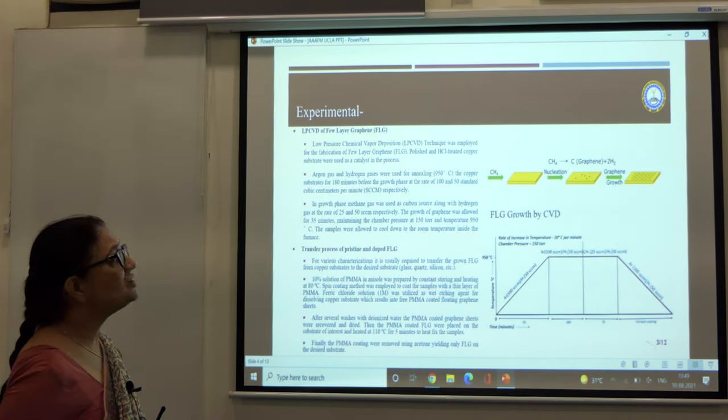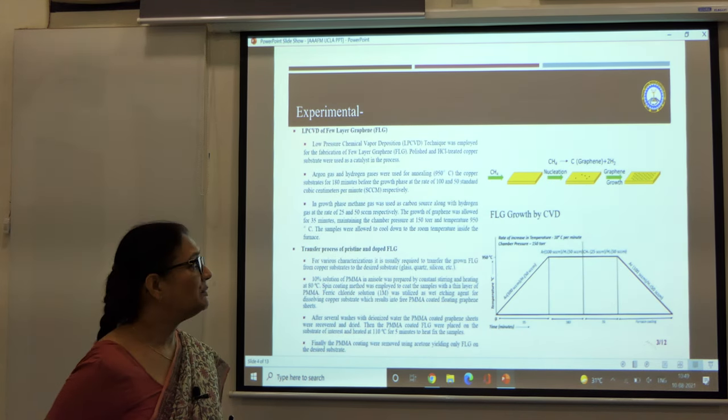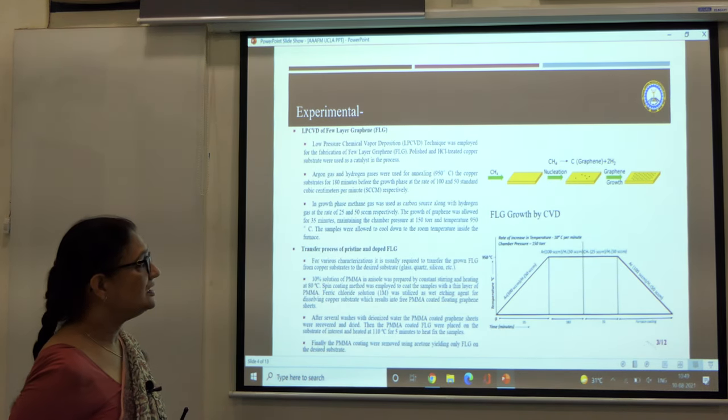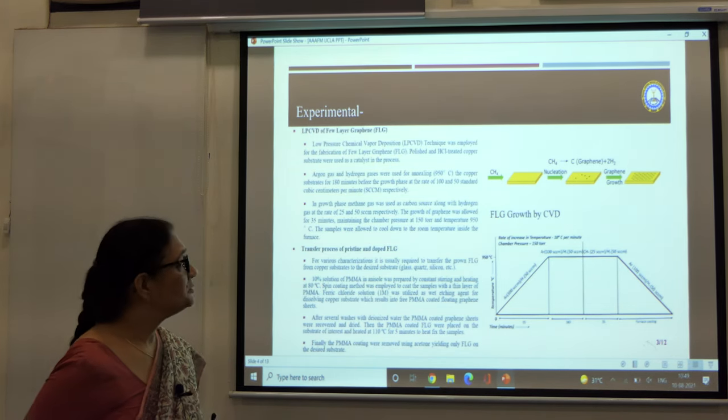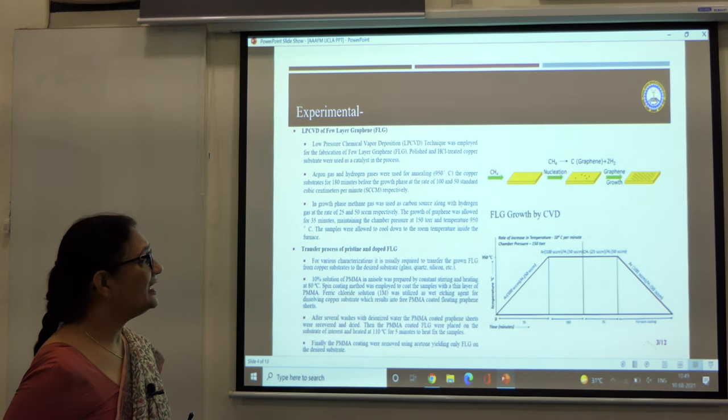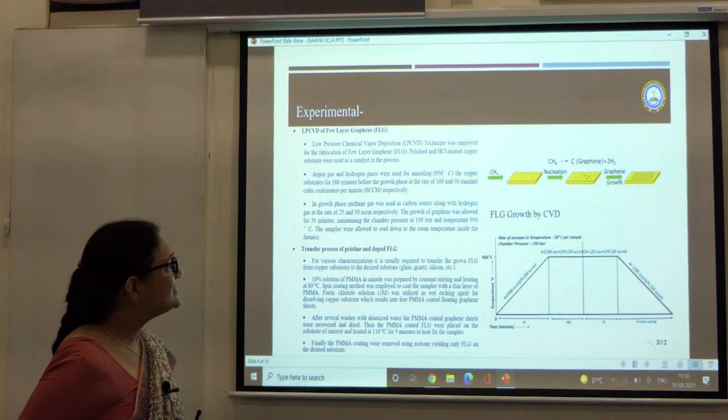This is the process for the few layer growth of graphene, and the optimization of the processing conditions gives us control over the number of layers which we get in the pristine graphene. For the doping of this graphene, we introduced the nitrogen gas as well.